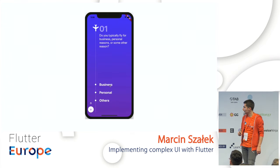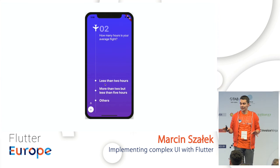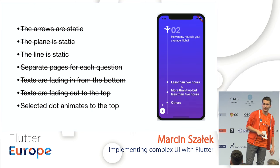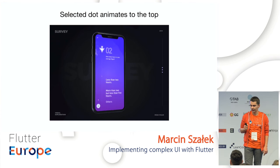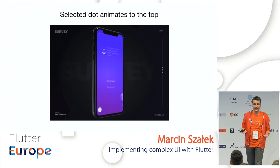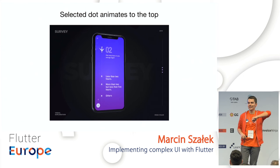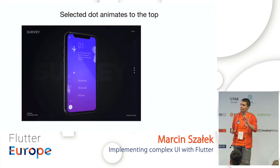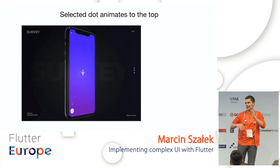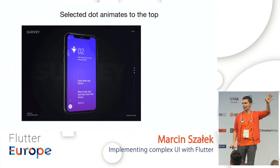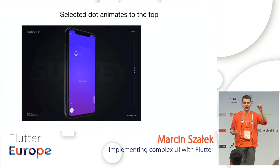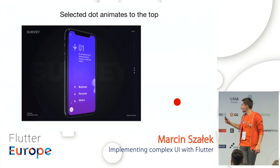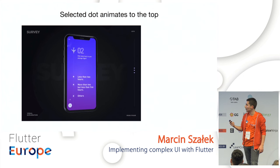The selected dot animating to the top is tricky — the dot is in a row and needs to travel to the plane. The solution: put another dot in the exact same position as the selected one, hide the original, animate this new dot to the top, then remove it. The user won't notice it's a different widget. To position it anywhere including above other widgets, we use the Overlay widget, which puts a widget on top of the entire application — useful for things like progress indicators that need to block the screen.